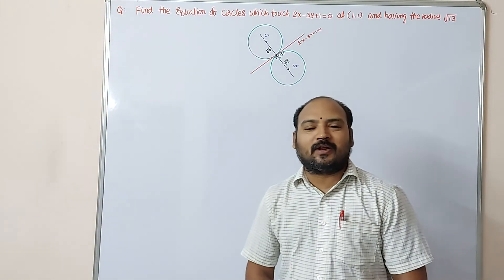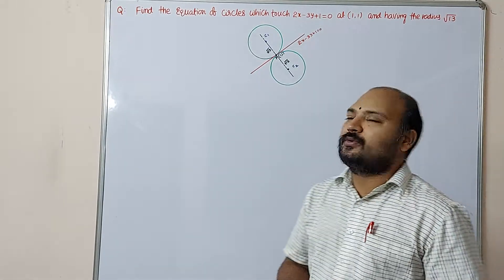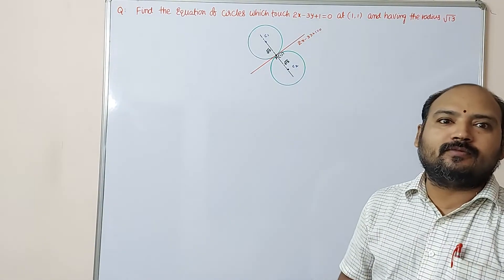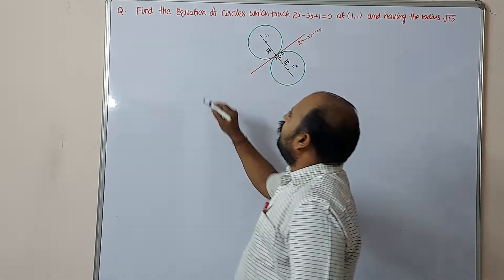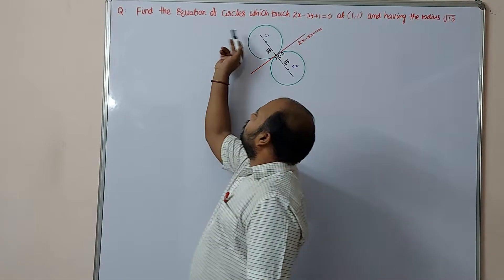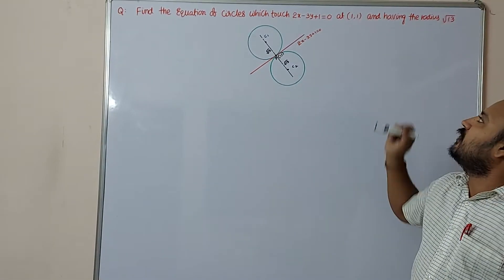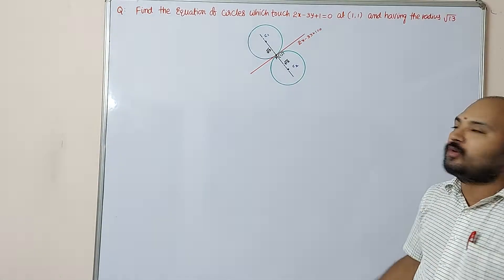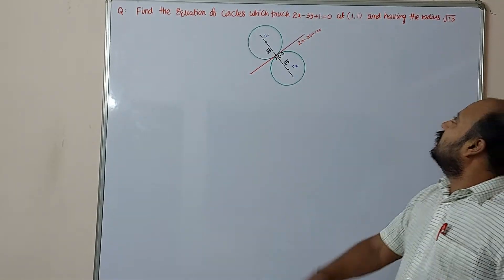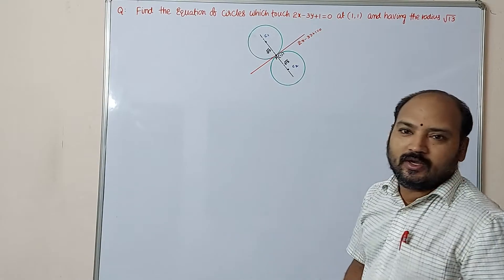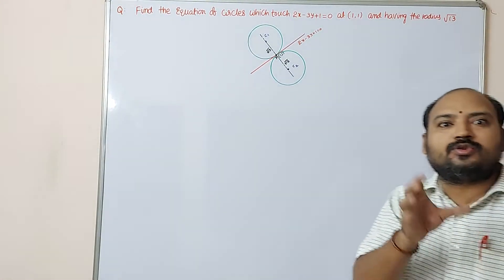Hi dear students, welcome to Maths with Panindra. In this video, one example problem from circles we are going to discuss. Find the equation of circles which touch 2x minus 3y plus 1 equal to 0 at (1,1) and having the radius root 13.